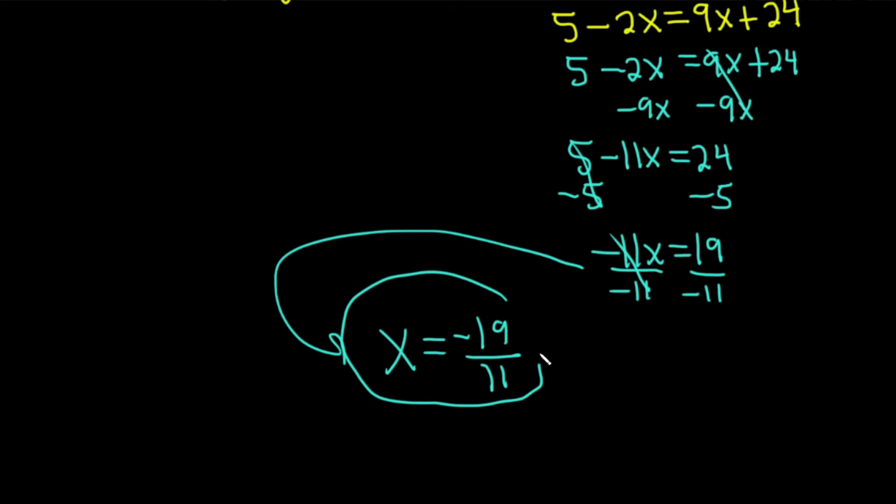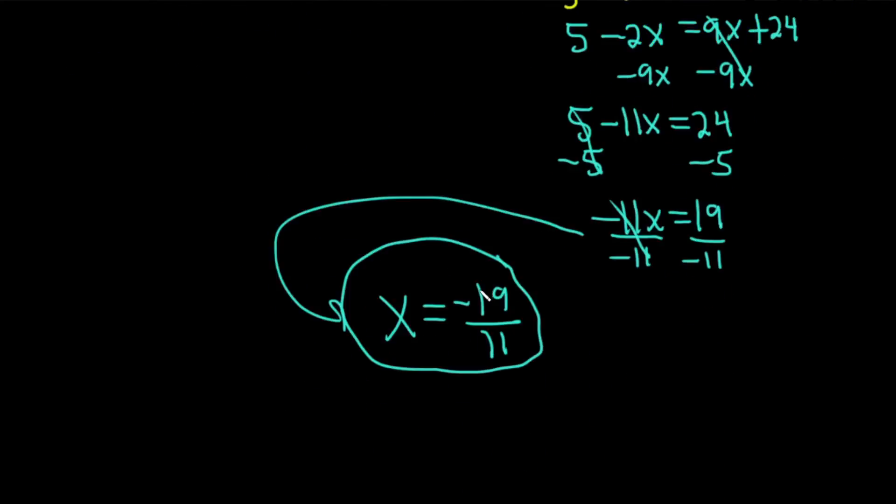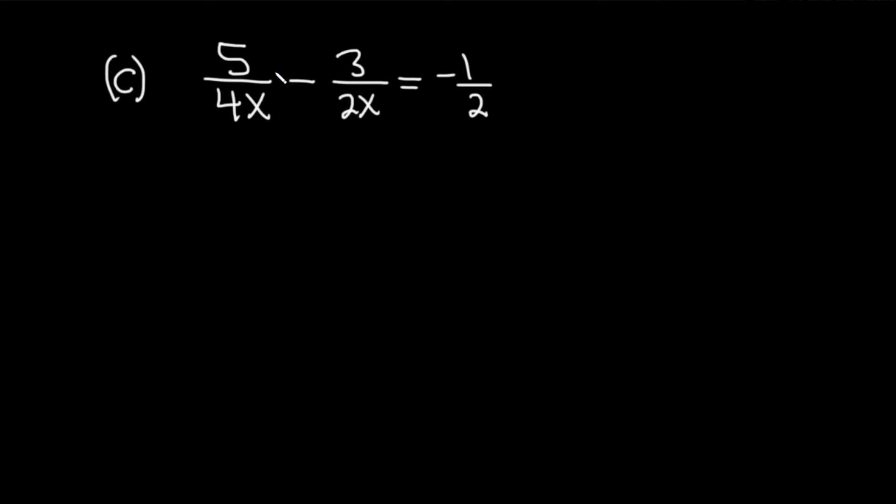Wow, that was pretty tough—way harder than the first example we did. It just shows how much more work fractions can create. Let's do another one with fractions so you get more practice. Part C: we have 5/4x - 3/2x = -1/2. Let's solve this.